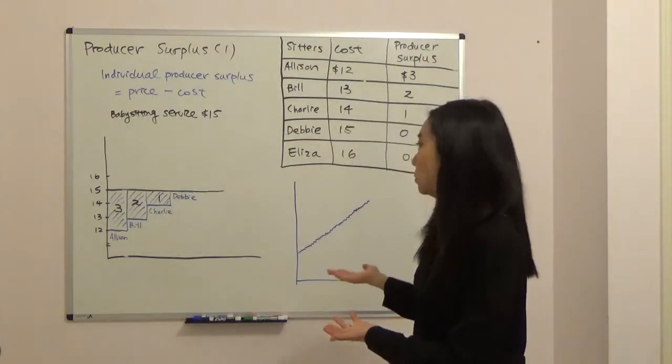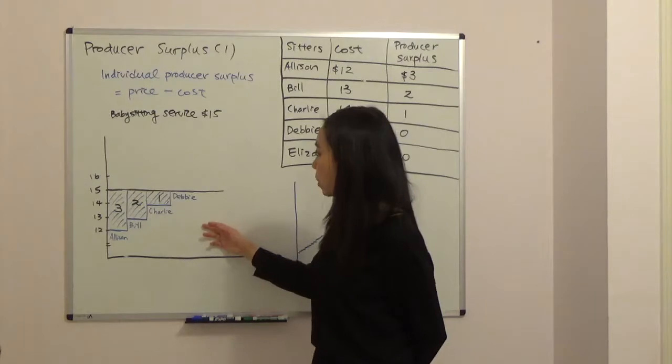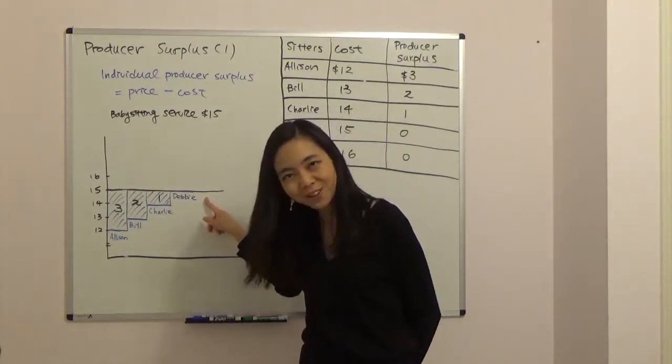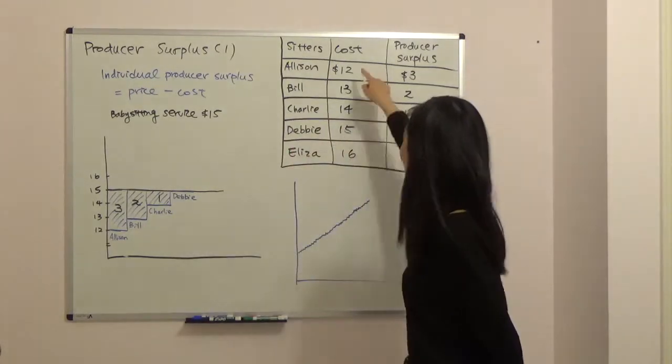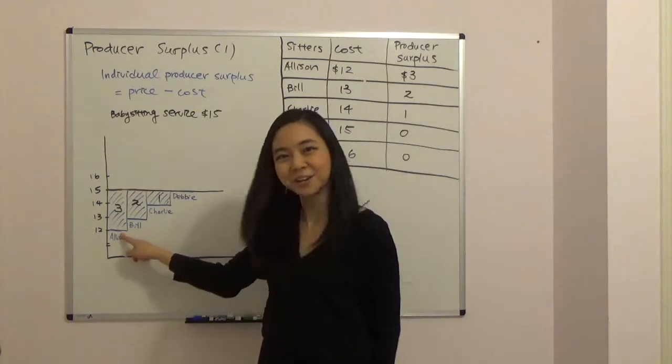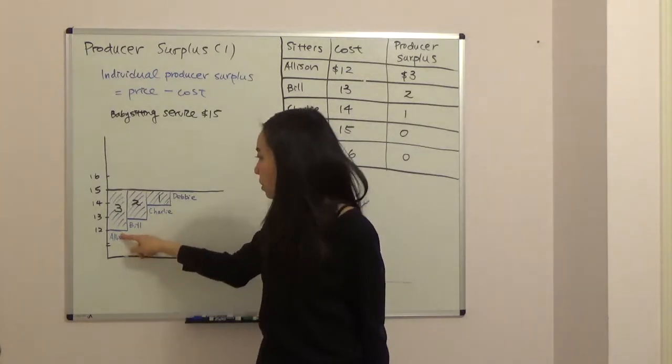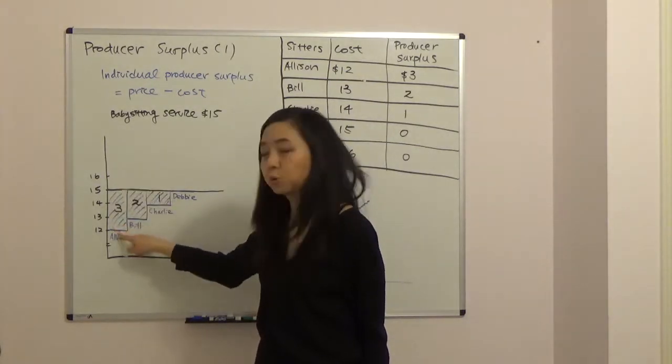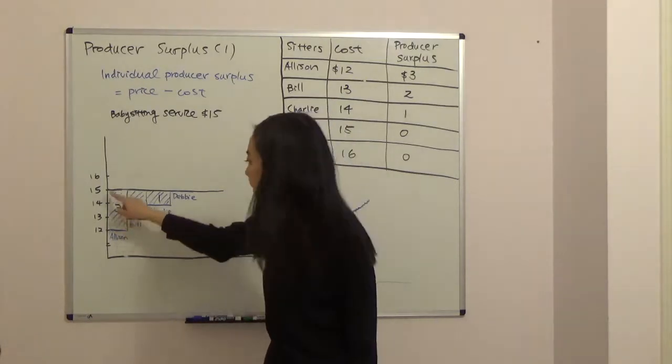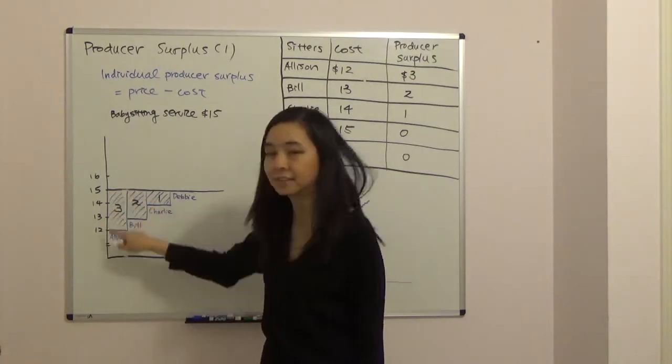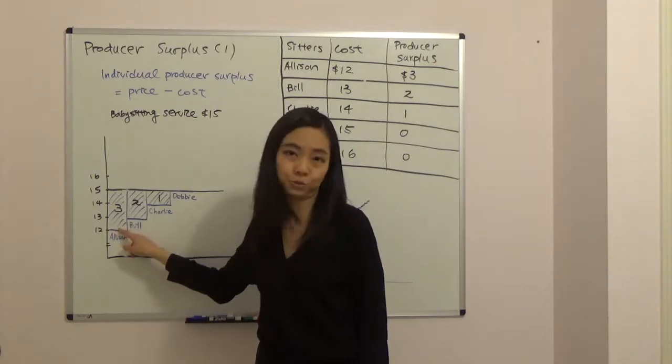We can draw their producer surplus like this. We know the ongoing price right now is $15 and Alison's cost is $12 right here. So Alison's producer surplus will be $15 minus $12, that will be $3. And graphically, you can see it's this block for Alison, that's her producer surplus.